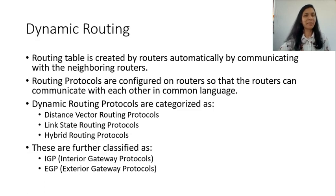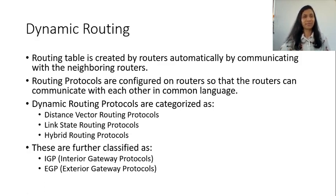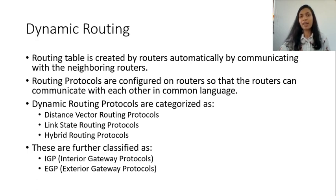Let us begin with dynamic routing. In case of dynamic routing, the routing table is created by the routers automatically by communicating with the neighboring routers. You need to configure the routing protocols on the routers. The routers which have the same routing protocol configured on them can speak to each other in a common language and exchange routing information with each other. Using this routing information, the routers themselves can create their own routing tables.